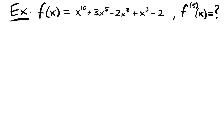Welcome back. Let's start with this function: x to the tenth power plus 3 times x to the fifth minus 2x cubed plus x squared minus 2. We want to find the fifth derivative — that's what this notation means here — of this function. So we are going to be taking a total of five derivatives in this example.